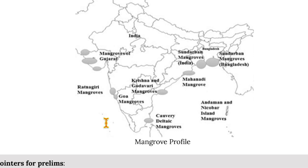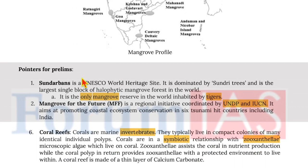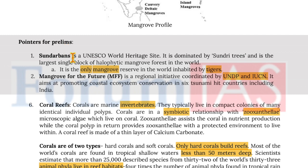Mangrove profiles of India include Sundarbans delta (India and Bangladesh), Mahanadi mangroves, Krishna and Godavari mangroves, Kaveri deltaic mangroves, Goa and Ratnagiri mangroves, and mangroves of Gujarat. Sundarbans is a UNESCO World Heritage Site dominated by Sundari trees and is the largest single block of halophytic mangrove forest in the world and the only mangrove reserve inhabited by tigers. Mangroves for the Future is a regional initiative coordinated by UNDP and IUCN, aiming at promoting coastal ecosystem conservation in six tsunami-hit countries including India.